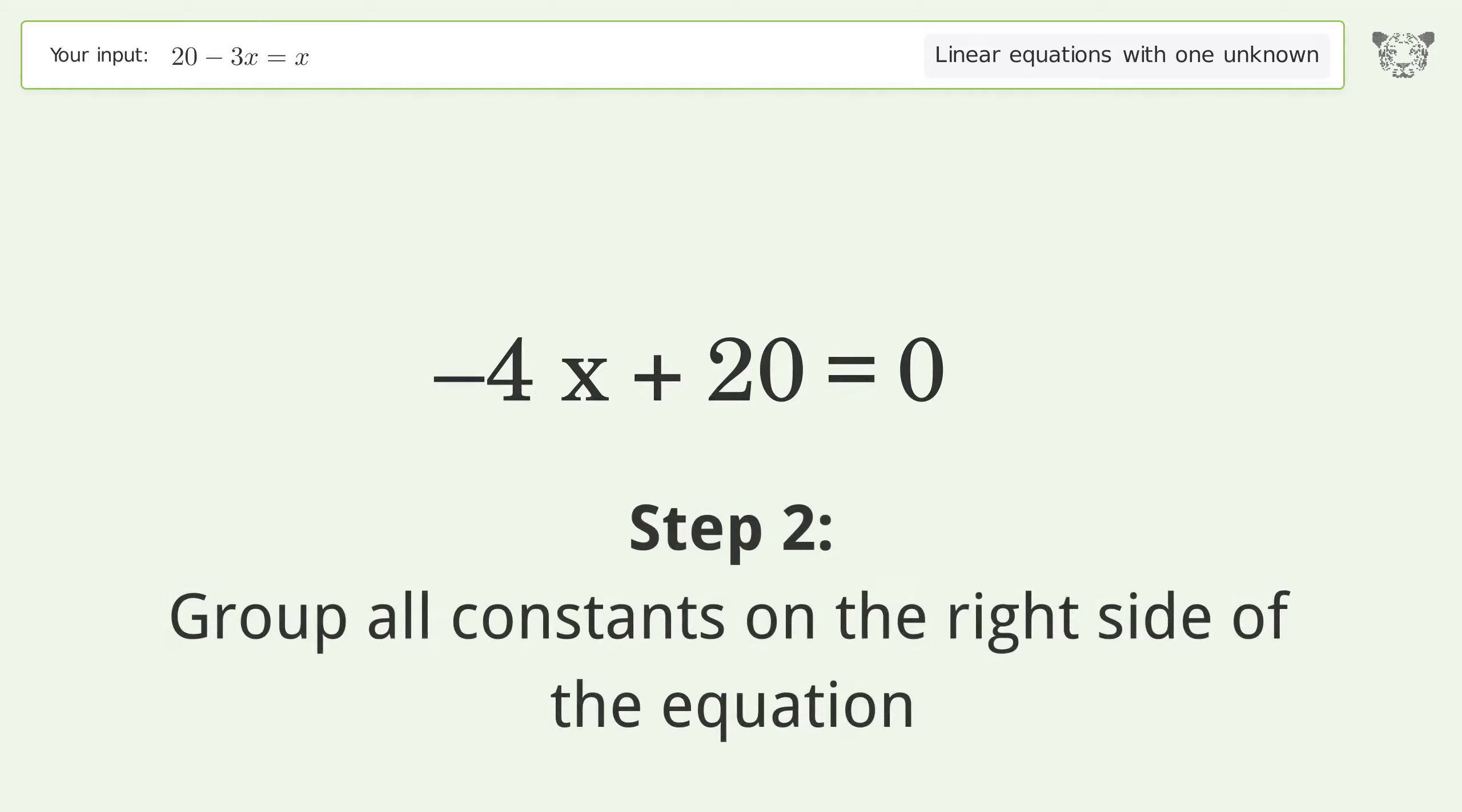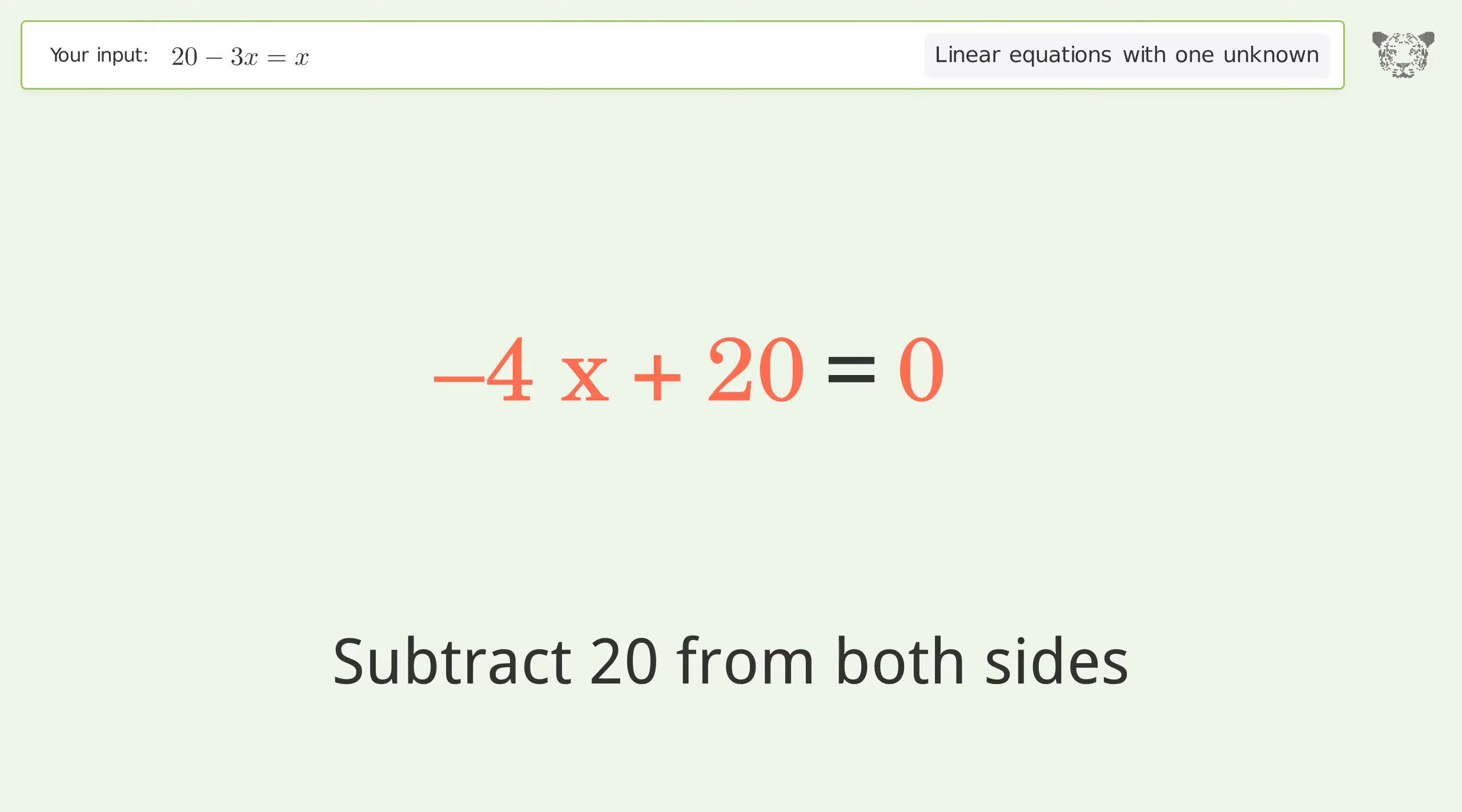Group all constants on the right side of the equation. Subtract 20 from both sides.